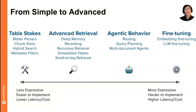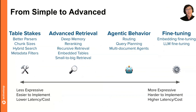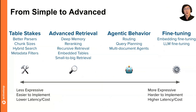One way of looking at this is an easy-to-hard axis. On the left, these are techniques that are less expressive, easier to implement, and incur lower latency and costs. On the right, you have techniques that are more expressive, harder to implement, and incur higher latency and costs.